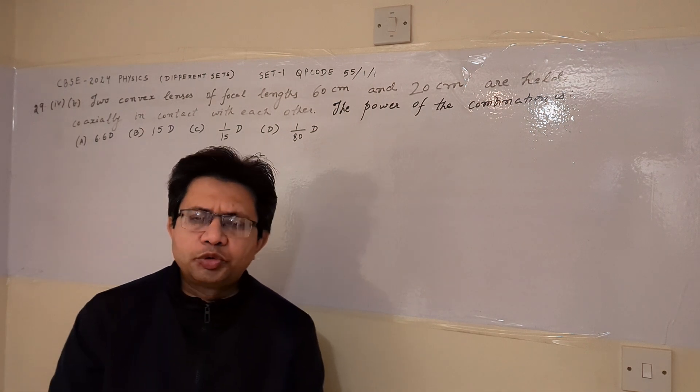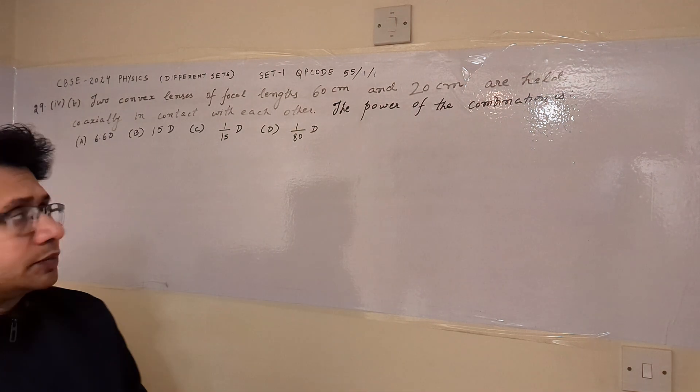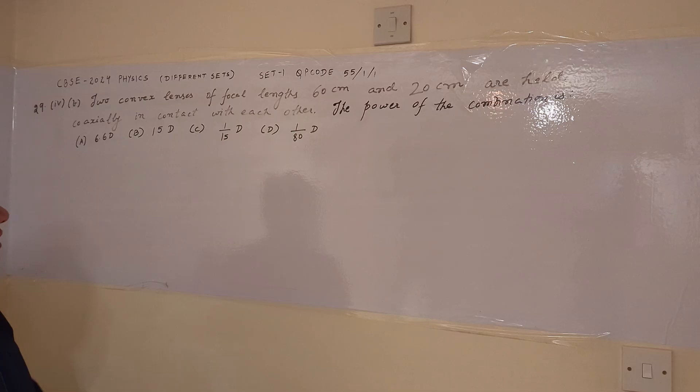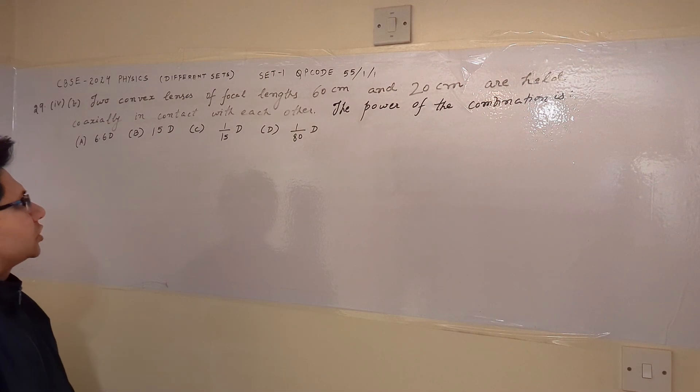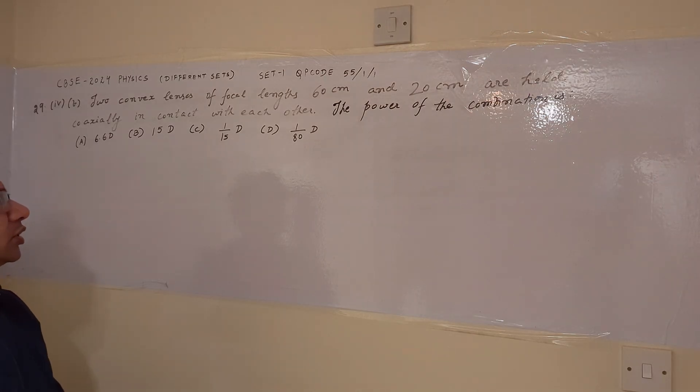Hello students, how are you? Hope you are doing well. Now the question is: two convex lenses of focal lengths 60 centimeter and 20 centimeter are held coaxially in contact with each other. The power of the combination is: option A, 6.6 diopter; option B, 15 diopter; option C, 1 upon 15 diopter; and option D, 1 upon 80 diopter.